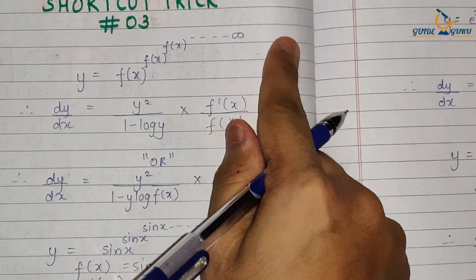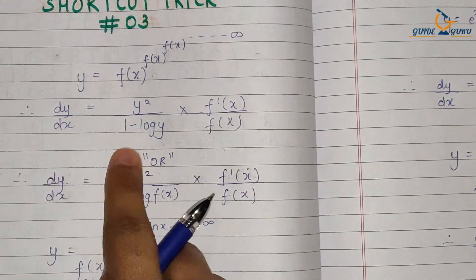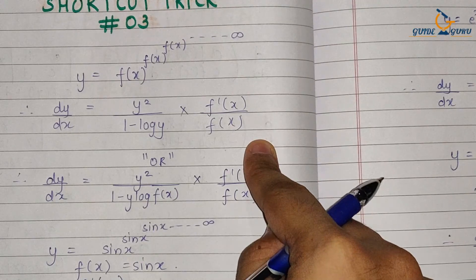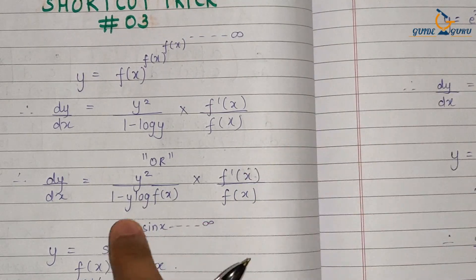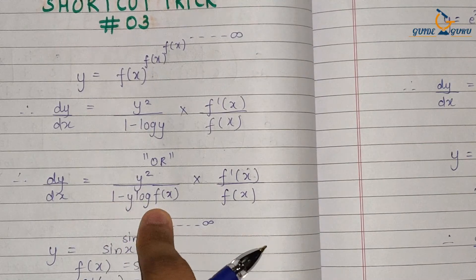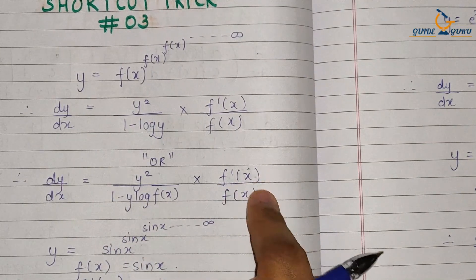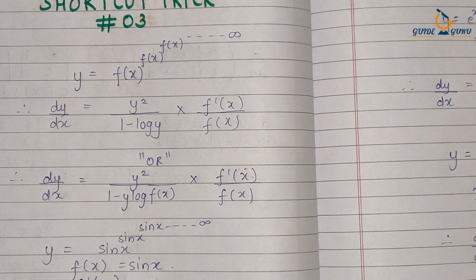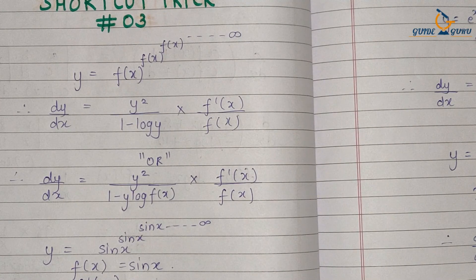I hope you like this shortcut. It is very simple: if you have f(x)^f(x)^f(x) till infinity, you can write dy/dx = y²·f'(x) / ((1 − log y)·f(x)), or alternatively y²·f'(x) / ((1 − y·log f(x))·f(x)). Please press the thumbs up button, share it with your friends, and subscribe to my channel. Thank you so much for watching this video.